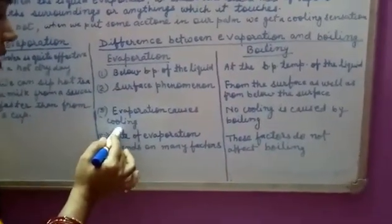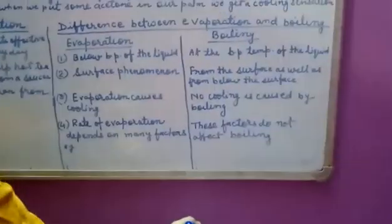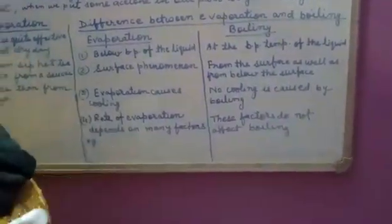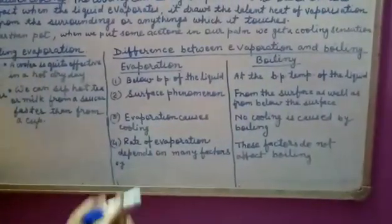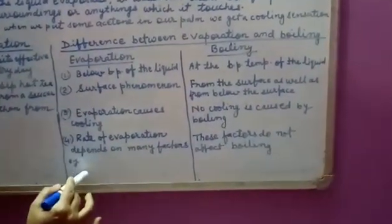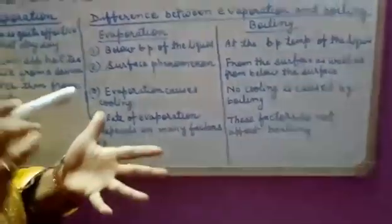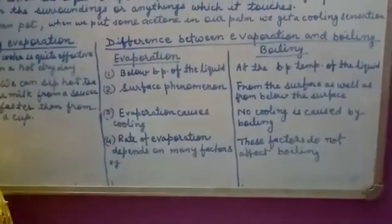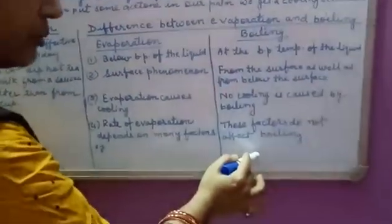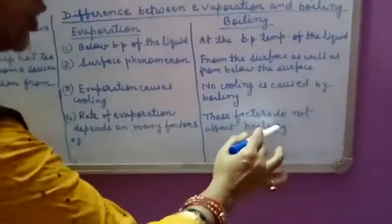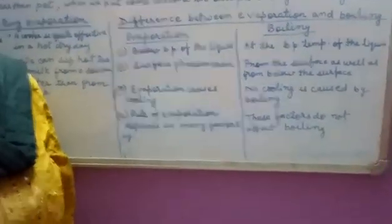The third difference is that the evaporation process causes cooling, but in boiling, no cooling is caused. The fourth difference is that the rate of evaporation depends on many factors like temperature of liquid, surface area, wind speed, and humidity, whereas the boiling process does not depend on any of these factors.